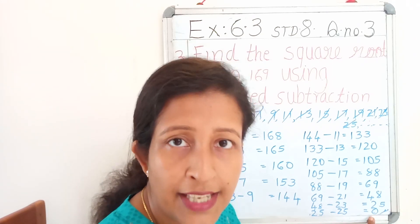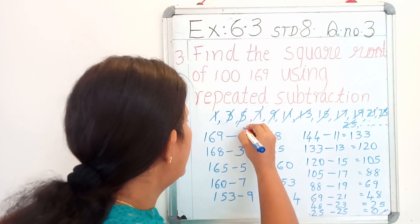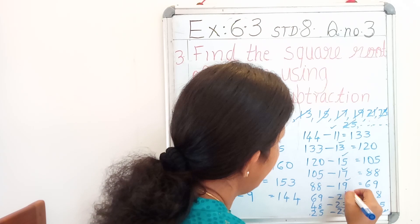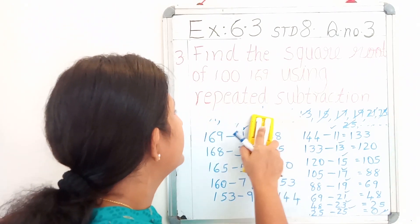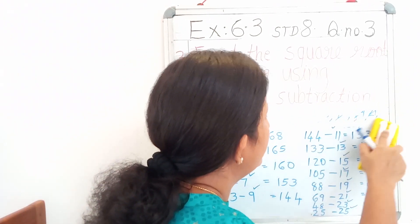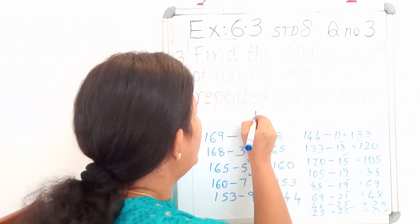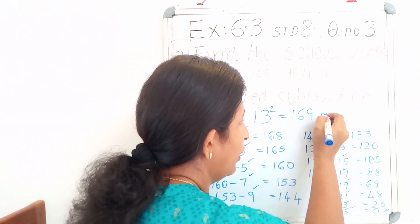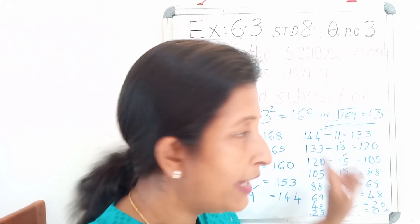Now we reached the answer 0. Next we are going to count how many odd natural numbers we used to get 0: 1, 2, 3, 4, 5, 6, 7, 8, 9, 10, 11, 12, 13. We used 13 odd natural numbers. We are asked to find the square root of 169. By using the repeated subtraction method, we got 13 squared equals 169, or we can write the square root of 169 equals 13. Both are correct.